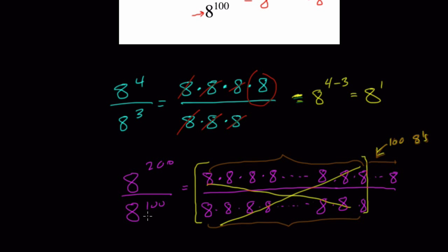They all basically go away. In effect, by dividing to 1, they are no longer meaningful. And what remains are the other 100 8s in the numerator. That's why the answer is 8 to the 100.